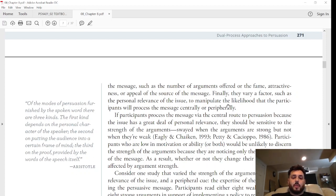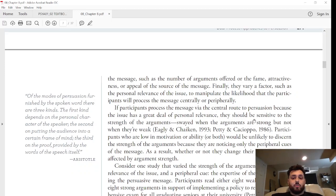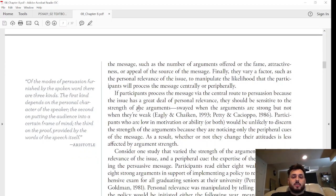Centrally or peripherally. If participants process the message via the central route to persuasion because the issue has a great deal of personal relevance, they should be sensitive to the strength of the arguments—swayed when the arguments are strong but not when they're weak. Participants who are low in motivation or ability, or both, would be unlikely to discern the strength of the argument because they are noticing only the peripheral cues of the message. As a result, whether or not they change their attitudes is less affected by argument strength.